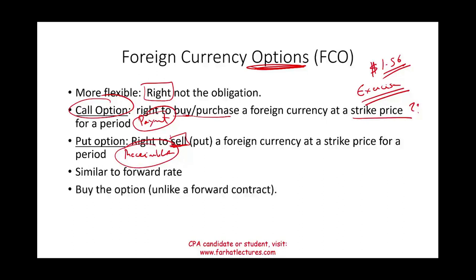Unlike a forward contract — which is simply an agreement with no upfront cost — for an option you must pay a premium. You can buy and sell these options on exchanges such as the Philadelphia Exchange. The premium gives you the right to exercise the option at the locked-in price.